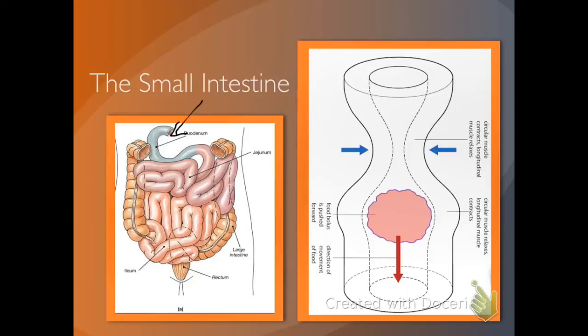The chyme—food that's gone through the digestion process—moves through the small intestine using peristalsis, similar to the motion in the esophagus. Muscle contractions on either side of the small intestine happen behind the chyme, pushing it further through. As it moves, it contacts the walls of the small intestine.